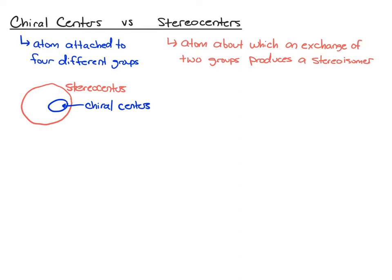So let's look at some examples. Start with something pretty simple. We know from our previous discussions that this carbon is a chiral center. There are four different groups: a methyl, ethyl, hydroxy, and a hydrogen. So we know it's a chiral center.